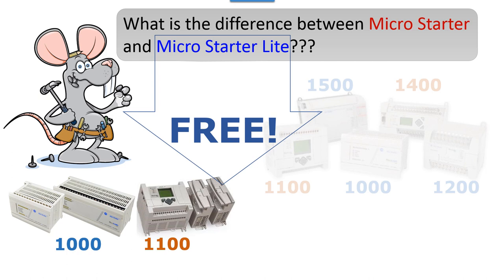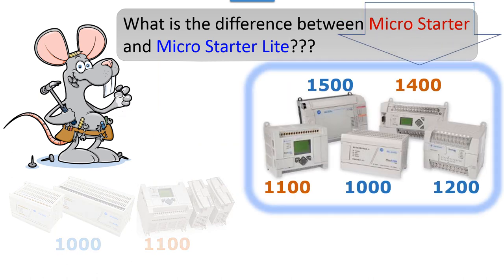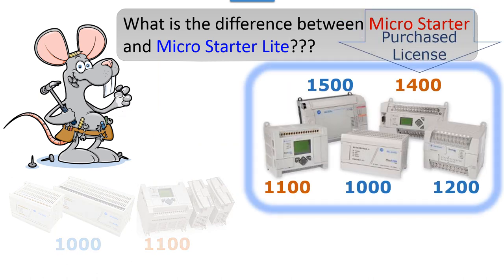If you're going to learn ladder logic diagrams in the RSLogix 500 arena, you either want a SLC 500 with a 505 processor that has Ethernet, an 1100 with MicroStarter Lite, or a 1400 with MicroStarter. Keep in mind that MicroStarter is a purchased license, not free.